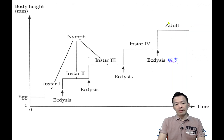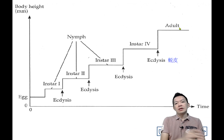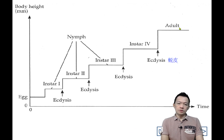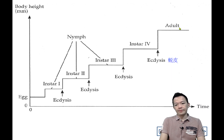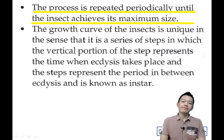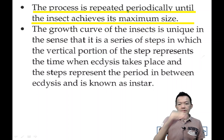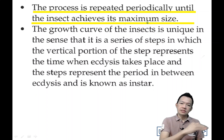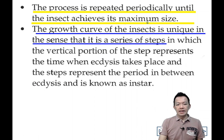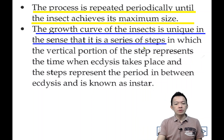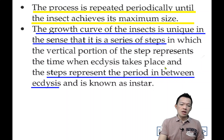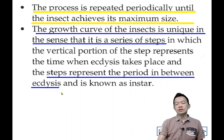Once they become adult, they quickly mate and then die. So when you see an insect flying around, it is an adult — and it won't be around much longer. In fact, it can spend 10 or even 20 years underground as instars, and then suddenly become an adult. That adult stage may only be the last month or two of its life. So this is what we call the growth curve of the insect. The process is repeated periodically until the insect achieves the maximum size. The growth curve of the insect is unique in the sense that it is a series of steps, and each step represents the period in between each ecdysis.